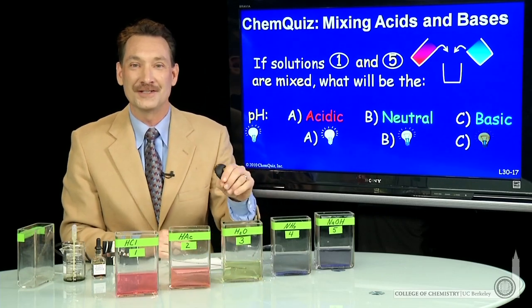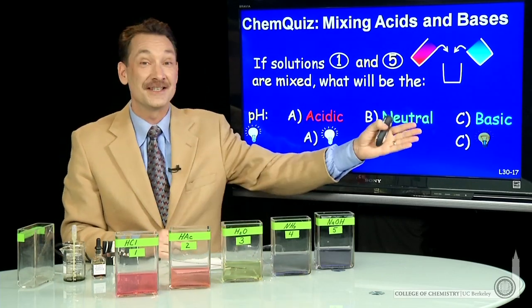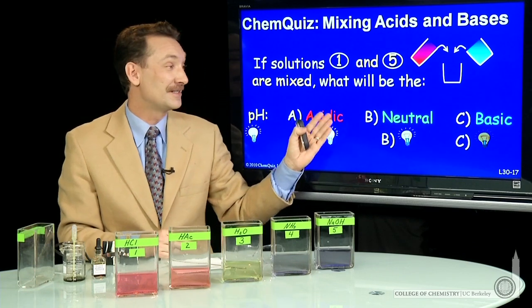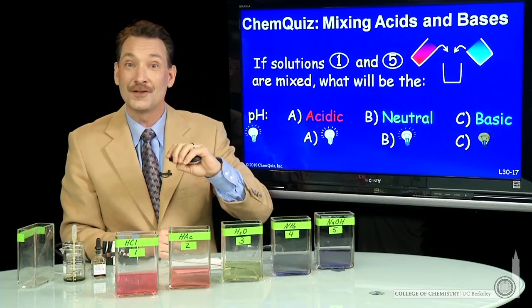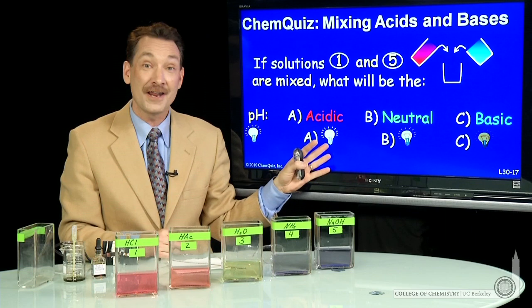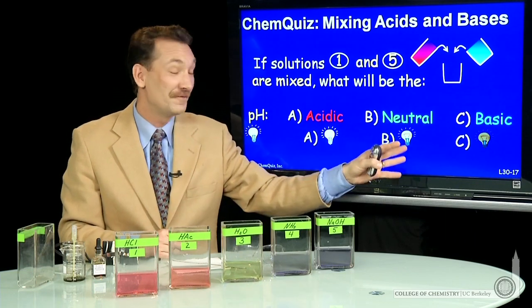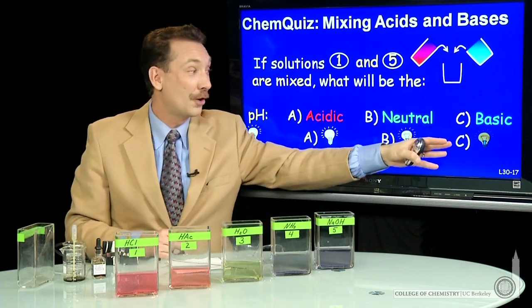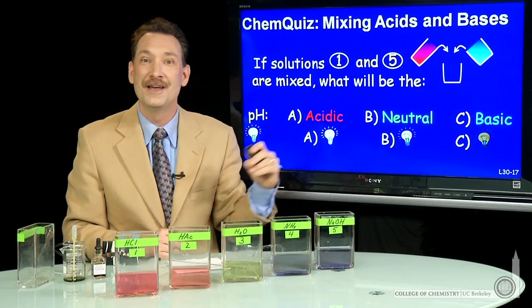Let's mix some acid and base solutions and see if we can predict the relative acidity. Will the solutions be acidic, neutral, or basic? And the relative ionic strength. Will there be a lot of ions giving a bright light, a few ions giving a dim light, or all ions consumed giving no light?